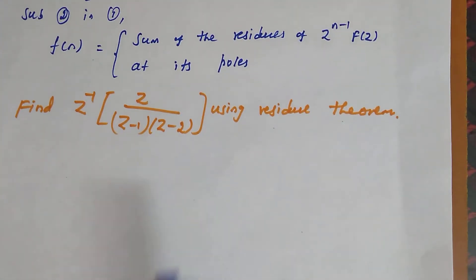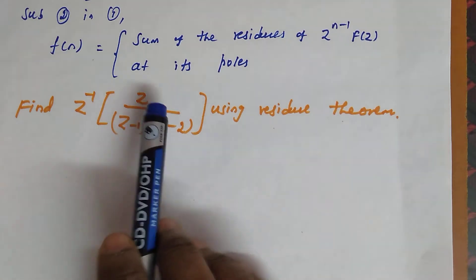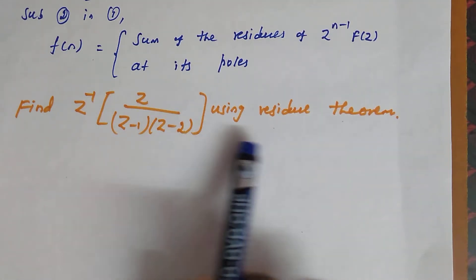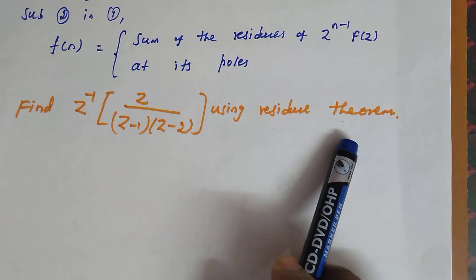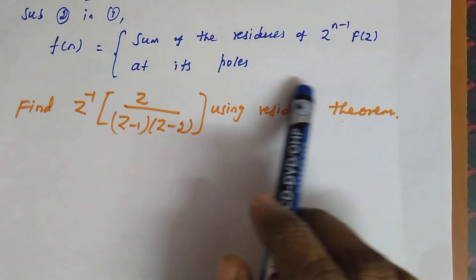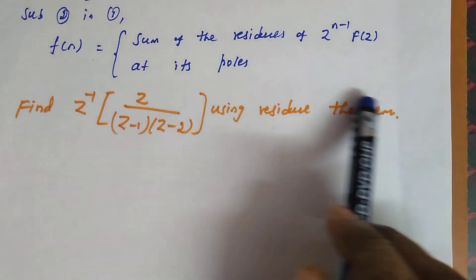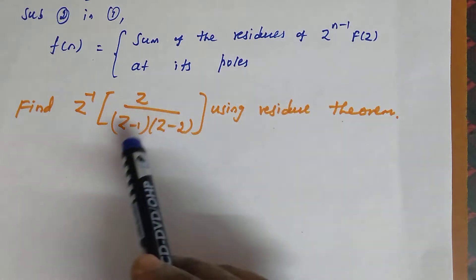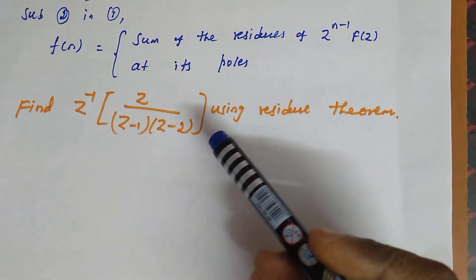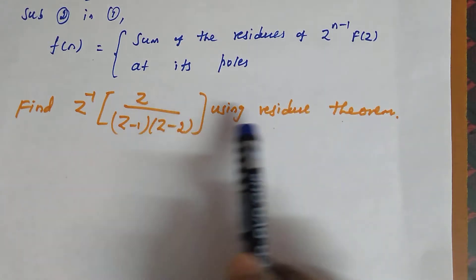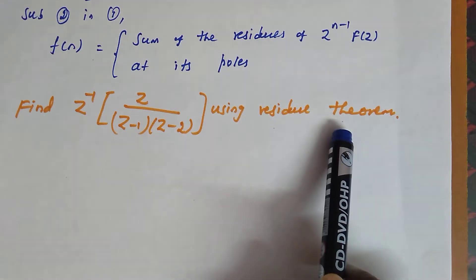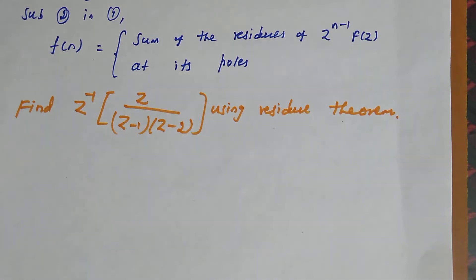Look at the first question: Find the inverse Z-transform of z / [(z−1)(z−2)] using the residue theorem. If the question does not specify the method, we can use partial fractions. But since residue theorem is specified, we must use that method.